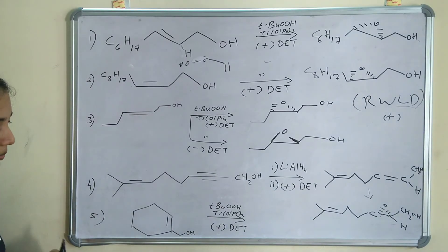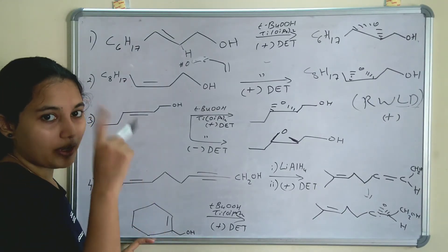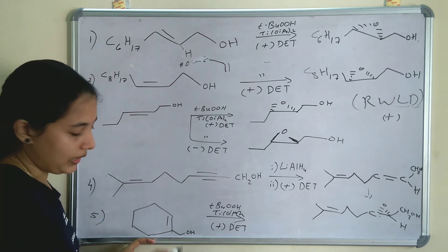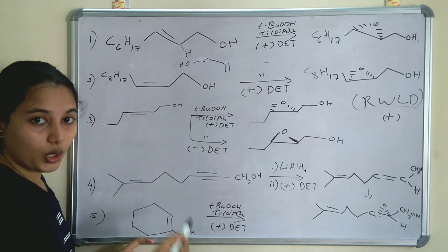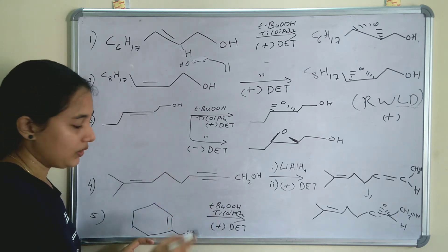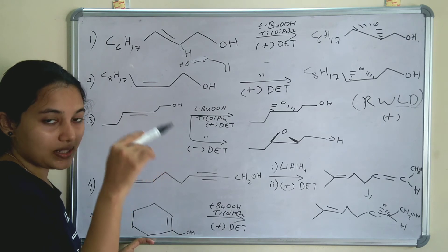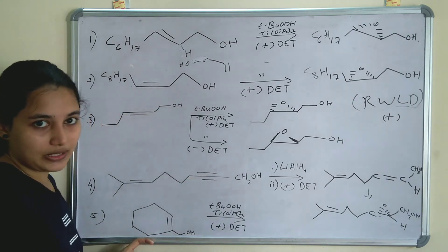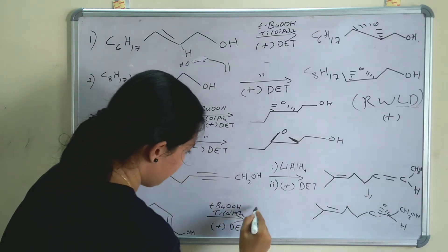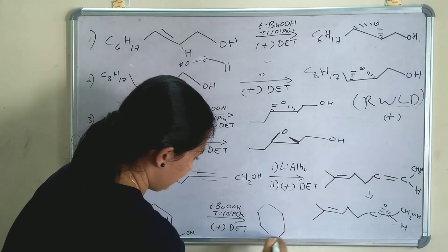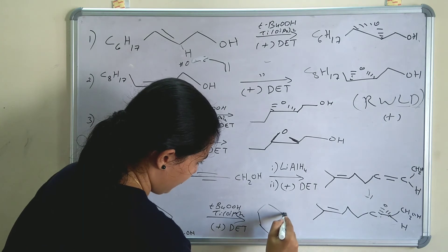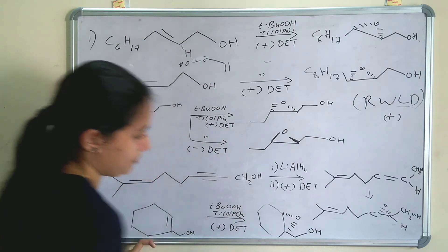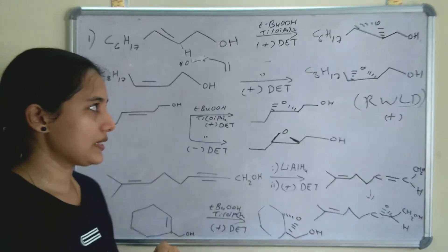In this final example, the alkene is already in vertical position and the OH is in the lower right position. We already stated: when OH is in lower right and the double bond is in vertical position, (+)-DET gives a below-plane epoxide. So the product has a below-plane epoxide. This is the product.